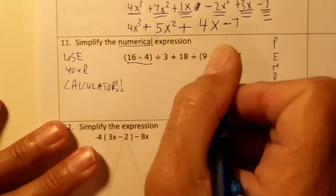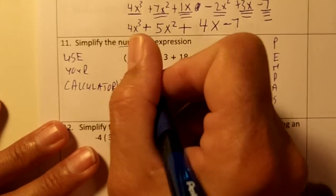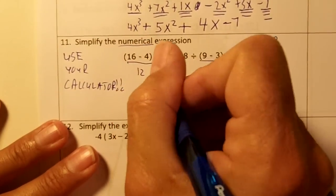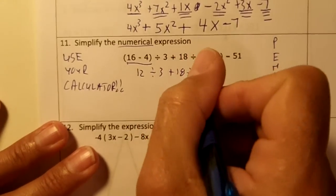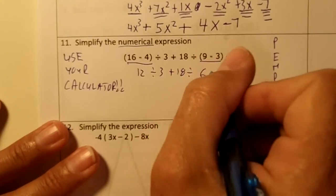So we're going to do the 16 minus 4 and the 9 minus 3. 16 minus 4 is 12 divided by 3 plus 18 divided by 6 minus 51.